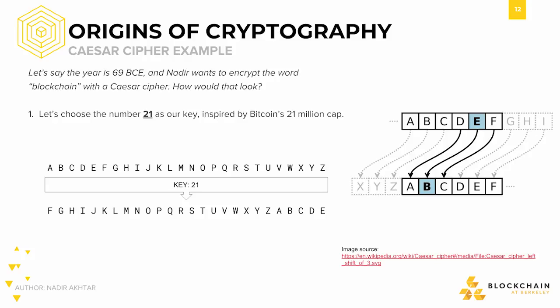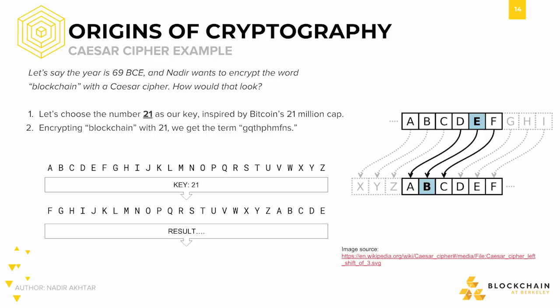So now that we've generated our table, how can we use it? Let's try plugging the word 'blockchain' into the table and see what happens. The first step is to locate the letter B in the top row of letters. Once we've done that, we can use the table to figure out which letter it should correspond to — it happens to be G. We go ahead and append that letter to our new encrypted message. With the second letter L, we locate the corresponding letter Q and add that to our list. If we skip ahead to the end, this is what our final result looks like. I'm not even going to try to pronounce that because it makes absolutely no sense — but that's exactly what we're trying to do. We want it to make no sense.